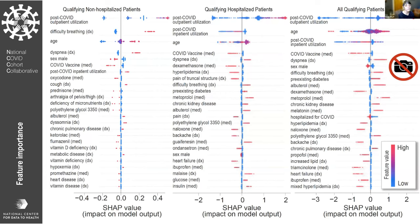For hospitalized patients, those who received dexamethasone appear to be much less likely to end up with long COVID. Our preprint has the top 50 features in each model — many of which aren't necessarily easily explainable, but many fit very nicely into long COVID features that have been discussed over the past few months.